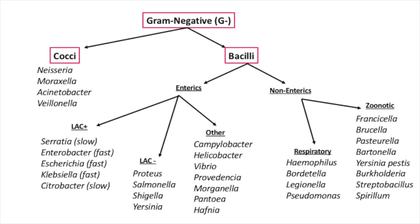Under the gram-negative non-enterics we can divide them into respiratory and zoonotic. Under the respiratory we have Haemophilus, Bordetella, Legionella, and Pseudomonas.